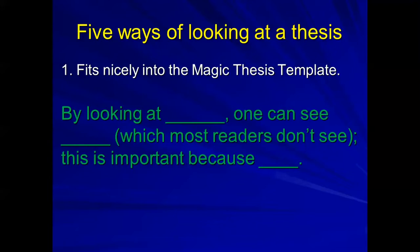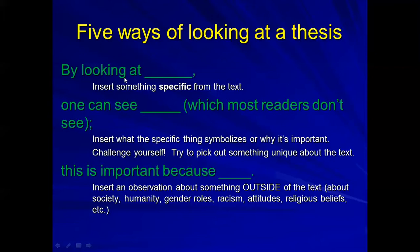One of the most useful things I've shared with students is what I call the magic thesis template. It goes like this: 'By looking at [blank], one can see [blank], which most readers don't see, and this is important because [blank].' So 'by looking at' is where you insert something specific from the text — for example, Jack's authoritative leadership style in Lord of the Flies. Then 'one can see' is where you insert what that specific thing symbolizes or why it's important.